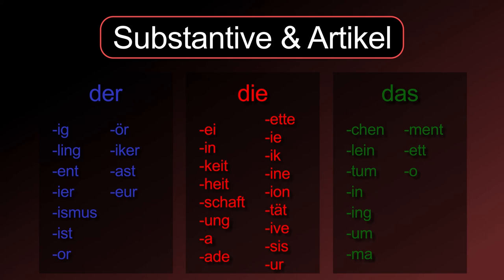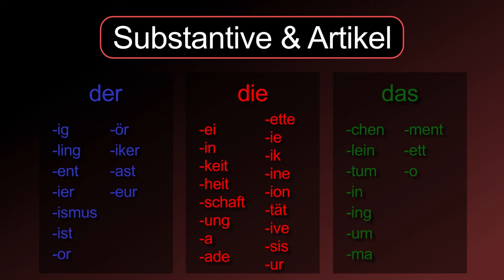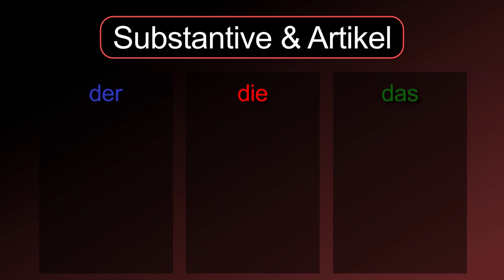Most of the masculine suffixes here are identifications of people, like being a director, principal, or a student. To identify female people, you have to use the same word plus the suffix -in, just like the word agent. Agent is a male agent, and Agentin is a female agent. Most of the time, German nouns will change when they are in plural. Here are the common types for their changes.